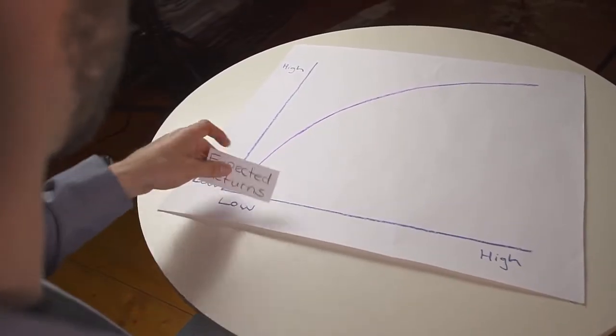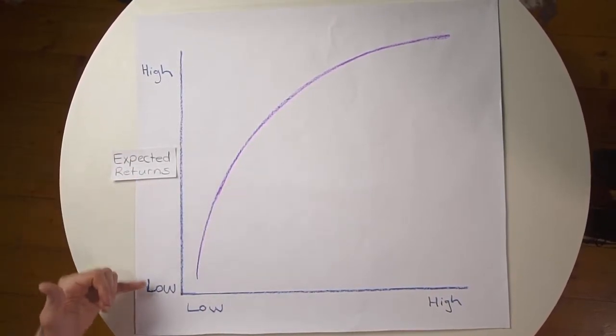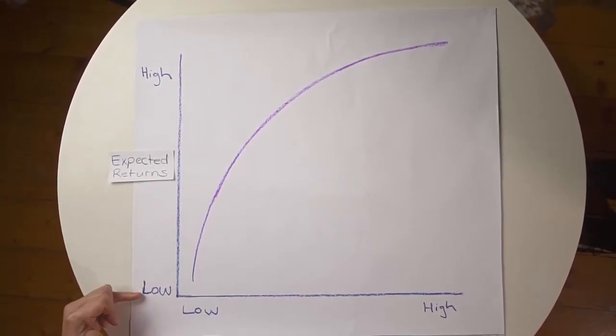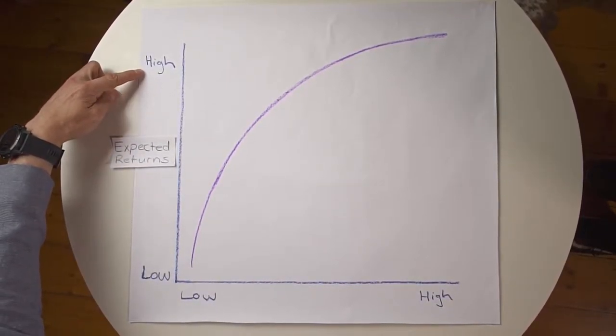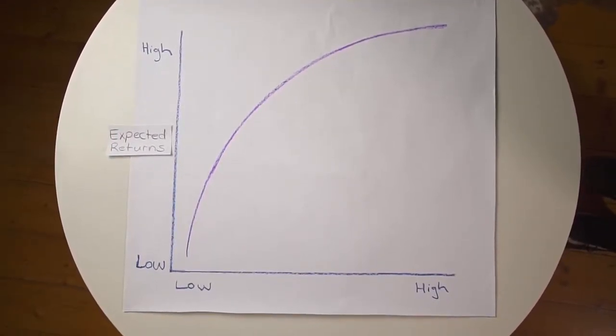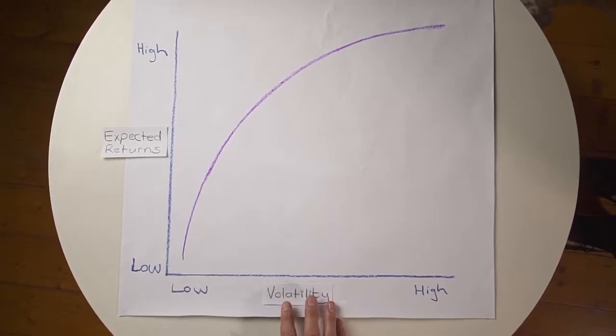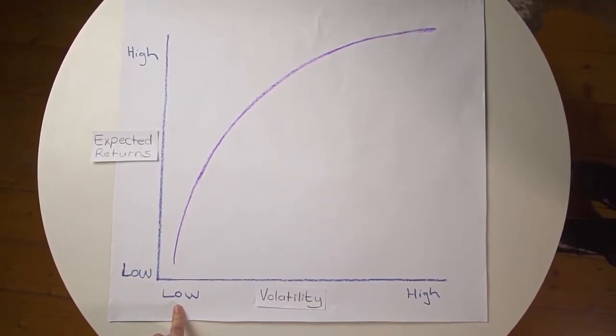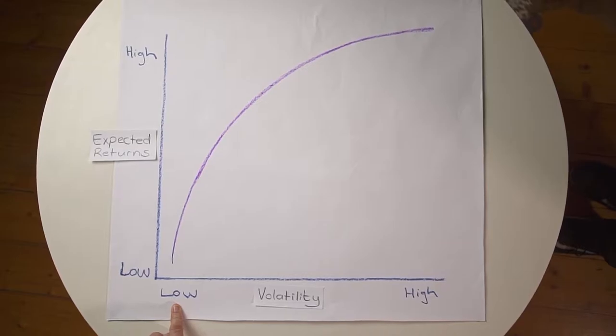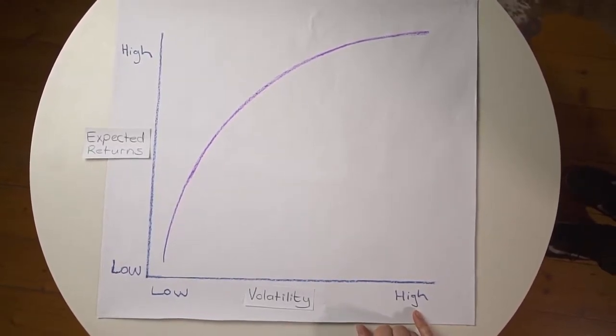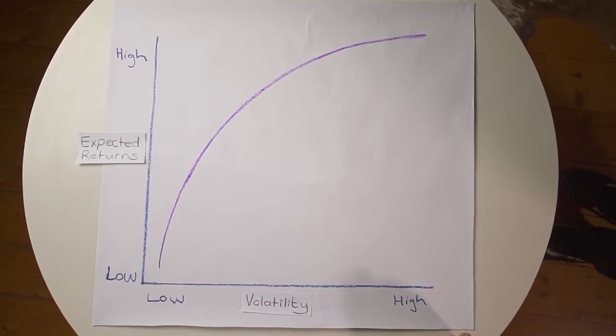Certain asset classes carry more risk than others. The riskier the asset class, the higher the potential returns. Here are the four major asset classes ranked from lowest to highest risk. The table shows expected return on one side — the lowest possible return to the highest possible return — and this section illustrates the volatility, from lowest to highest as you go up the scale.